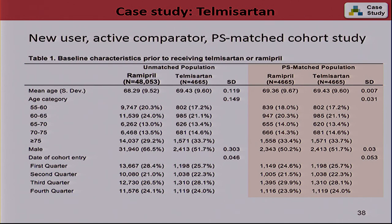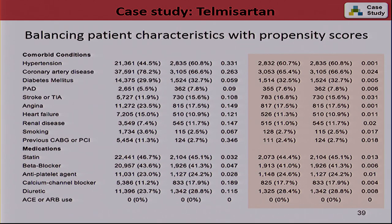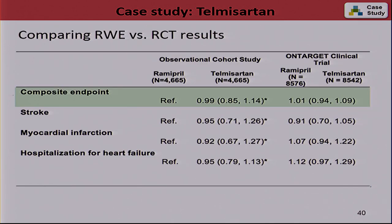We did the usual new user active comparator propensity score matched analysis. After propensity score matching, patient characteristics were nicely balanced between the two treatment groups. Let me point out the myth that database studies are always bigger than randomized trials — it's not the case. ON TARGET had 8,500 patients in each treatment group, but we found far fewer telmisartan patients in the real-world database. So it is not necessarily guaranteed that you have more statistical efficiency. The composite endpoint was very similar: 0.99 versus 1.01.